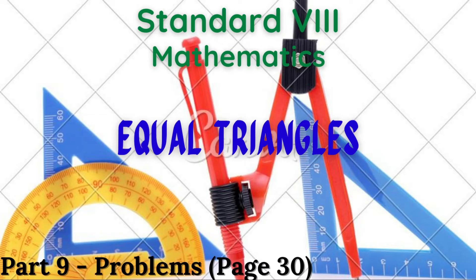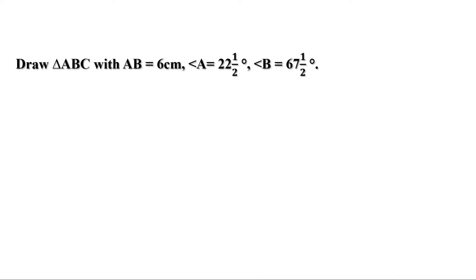Now let us check the answer of the homework. Draw triangle ABC with AB equal to 6 cm, angle A equal to 22 and a half degrees, and angle B equal to 67 and a half degrees.